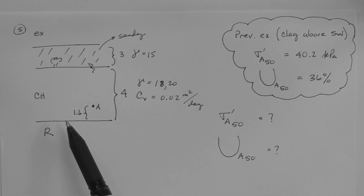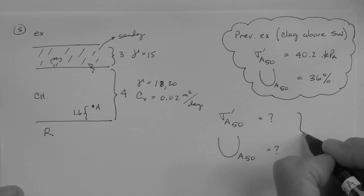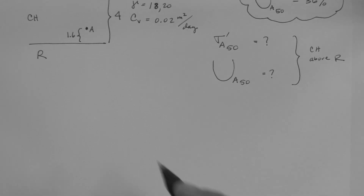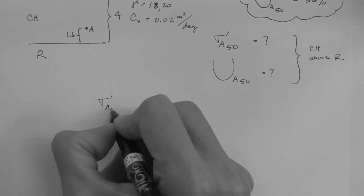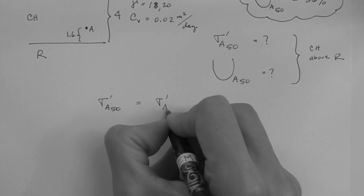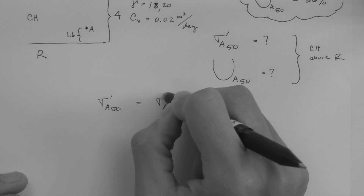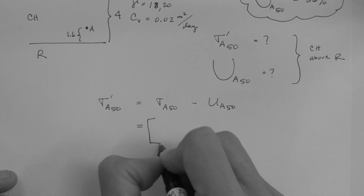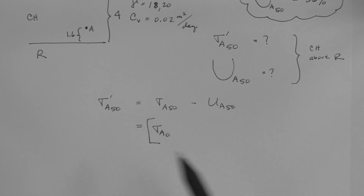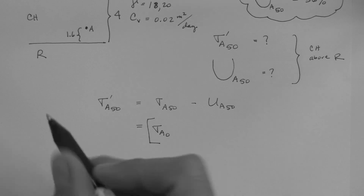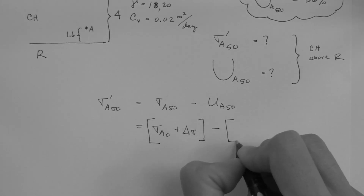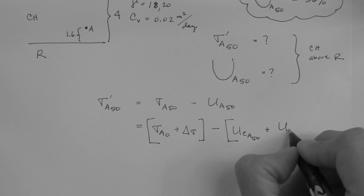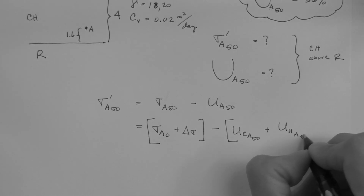For this case — clay above rock — basically the same approach as before: the effective stress at point A at 50 days equals the total stress at point A at 50 days minus the pore pressure at point A at 50 days. The total stress at point A at 50 days equals the total stress at point A at time zero (before the fill is placed) plus the fill load. The pore pressure is the sum of the excess pore pressure and the hydrostatic pore pressure at that point and time.